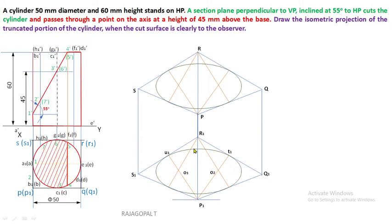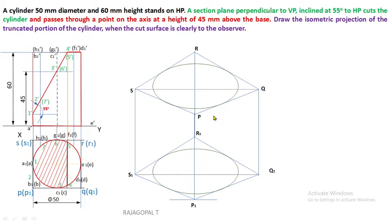There will be many lines in the isometric projection. Always draw all reference lines — including those used for completing the ellipse — using continuous thin lines, because numerous lines could cause confusion when converting the 1-to-7 cutting points of the section plane. Draw the major and minor diagonals of the ellipse: join S1 and Q1, and join P1 and R1 — likewise for the top ellipse. This will help in locating the cutting points A to H on the ellipse.